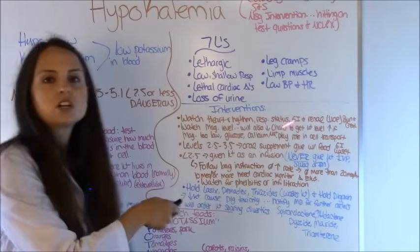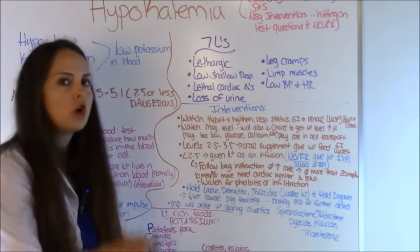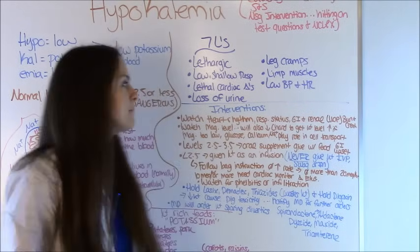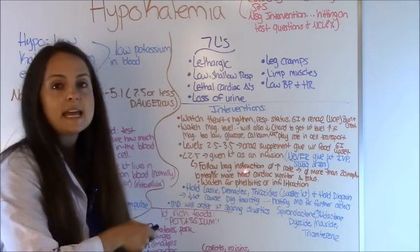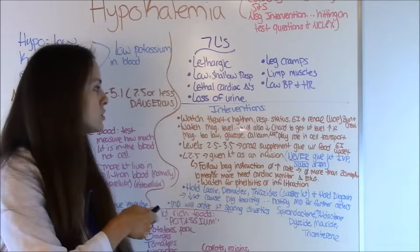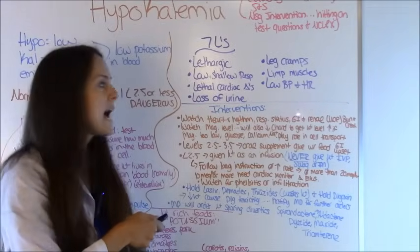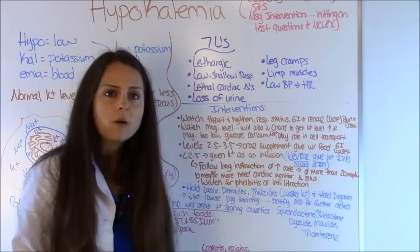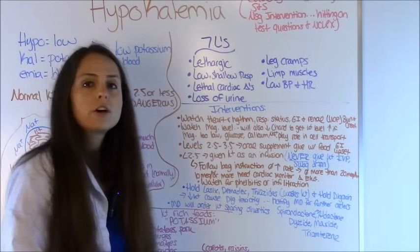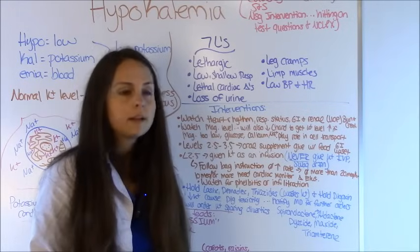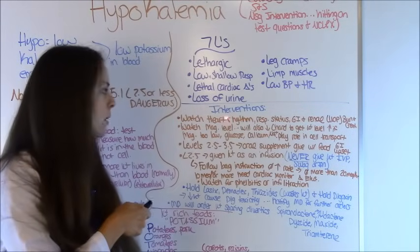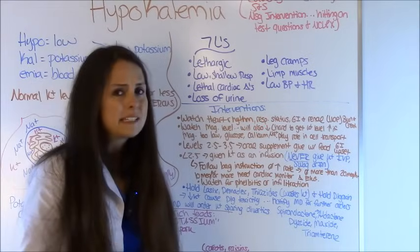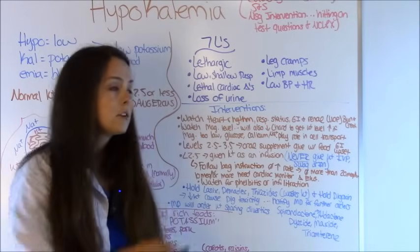Let's look at these nursing interventions because this is where a lot of your test questions are going to come from with hypokalemia. Whenever you have a patient in hypokalemia, you want to watch their heart rhythm, their respiratory status, their GI and renal status. You're looking at their urinary output, making sure they're not going into renal failure through their BUN and creatinine. And you probably want to put them on a cardiac monitor as well — most patients will be on a telemetry box, but if not, the doctor may order that.